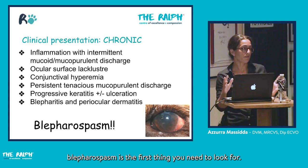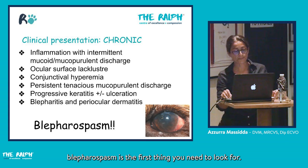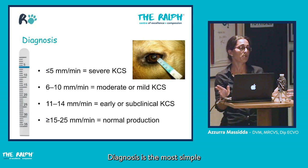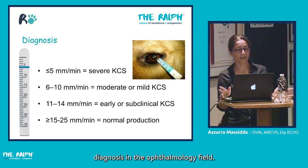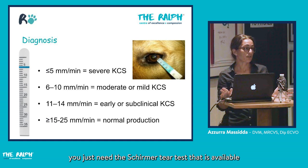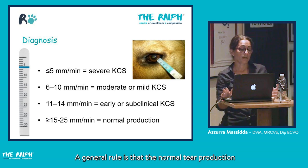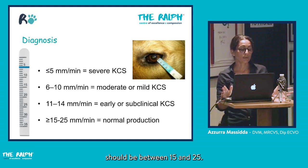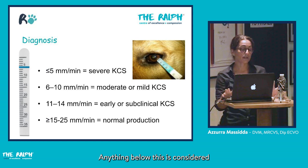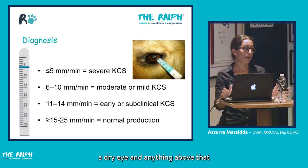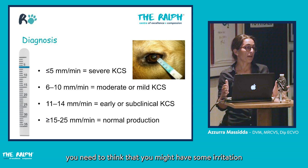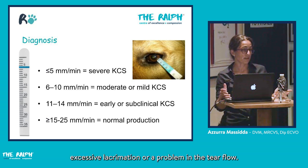Blepharospasm is the first thing to look for. Diagnosis is the most straightforward in the ophthalmology field — you just need the Schirmer test, available in any practice. Normal tear production should be between 15 and 25 mm/min. Anything below is considered dry eye, and anything above suggests irritation causing excessive lacrimation or a problem in tear flow.